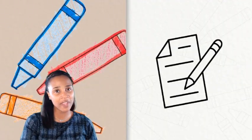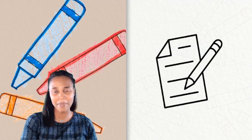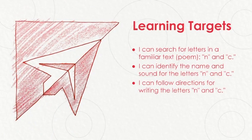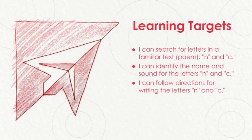If you have that special handwriting paper, go ahead and grab that. If not, any paper will work just fine. There are three learning targets for our lesson today. The first one says I can search for letters in a familiar text or poem — the letters N and C. Our second target says I can identify the name and sound for the letters N and C. And our last target says I can follow directions for writing the letters N and C.